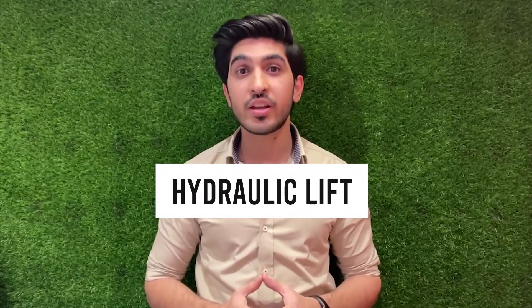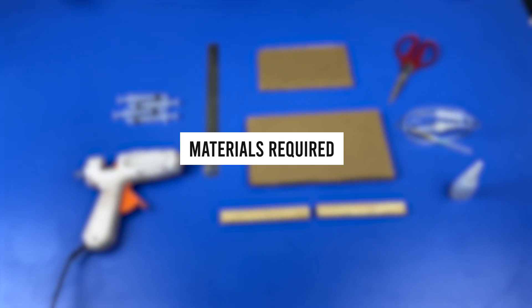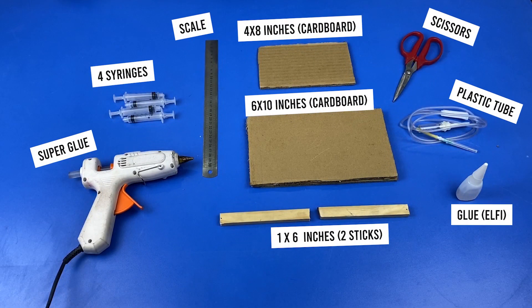Hello everyone, welcome back to another video of Hello Experts. In today's video we are going to create a hydraulic lift, so let's start the video. These are the materials required for this experiment: super glue, four syringes, scale, two cardboard pieces, scissors, plastic tube, Elfie glue, and two sticks. So let's start the procedure.